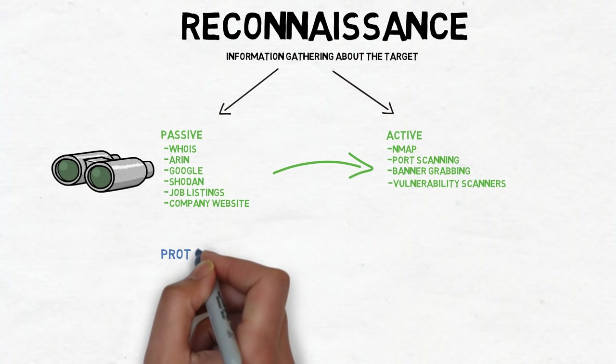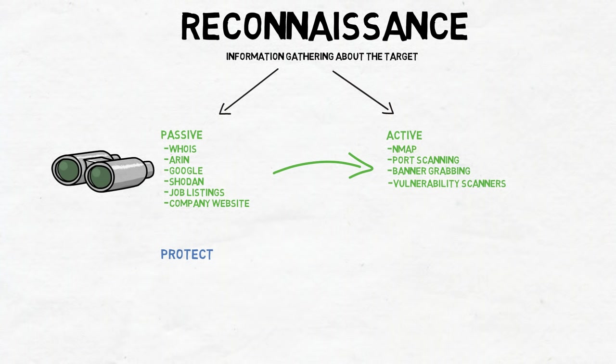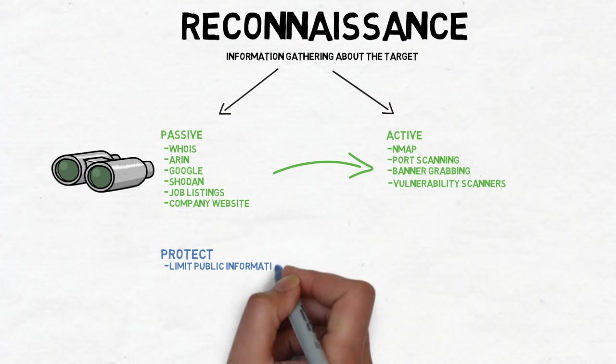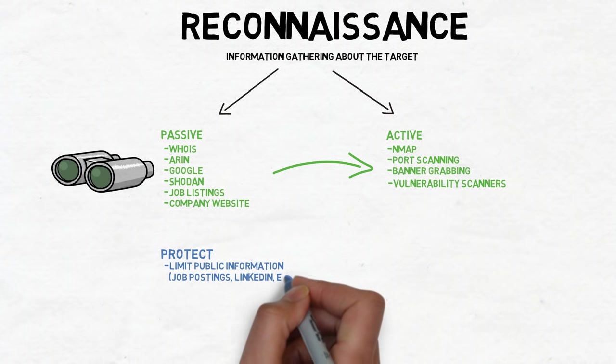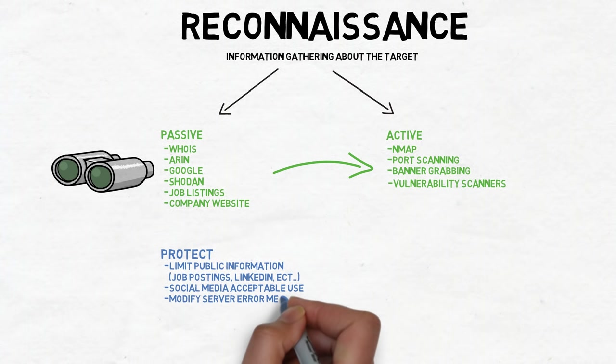Defending against passive reconnaissance means limiting the level of detail we expose publicly. That means limiting the information we put on job postings, training personnel on acceptable use of social media sites, and removing specific error messages from public servers.